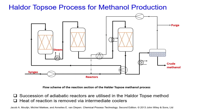The Haldor Topsøe process for methanol production uses a succession of adiabatic reactors in series. The heat of reaction is removed via intermediate coolers placed between each adiabatic reactor. So instead of one reactor as in ICI or Lurgy, this design uses a series of reactors with intermediate coolers, which is the key design difference.